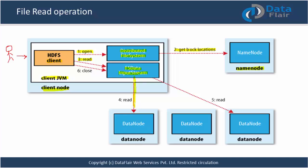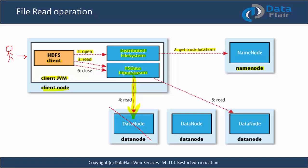At any point during reading, a data node may go down — server failure, power off, etc. In that case, the client reports the failure to the namenode. The namenode checks heartbeats and confirms the slave stopped responding. It then provides the location of another replica of the same block on a different data node. The client can then read from that alternate data node. That's how fault tolerance works in the HDFS file read operation.